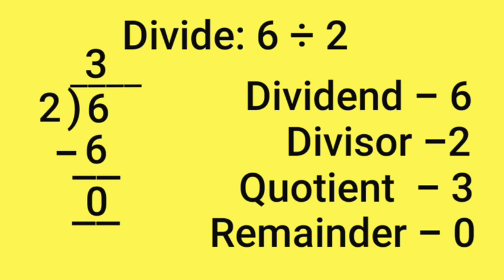So, in this sum, the dividend is 6, divisor is 2, quotient is 3 and the remainder is 0.